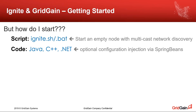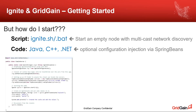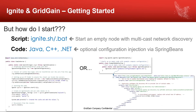This code may fully use the Ignite API, or it may be one line of code with an XML Spring Bean configuration injected into it. As we see in Java, that really is five or six lines of code to create a config and set up discovery for the cluster.